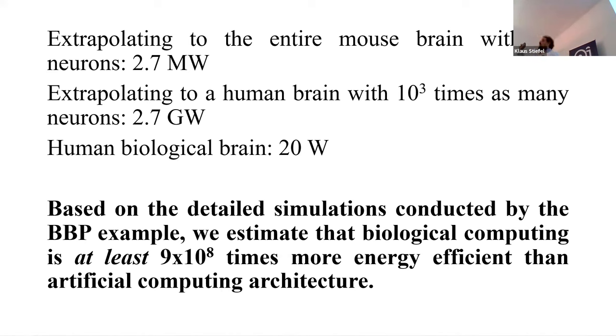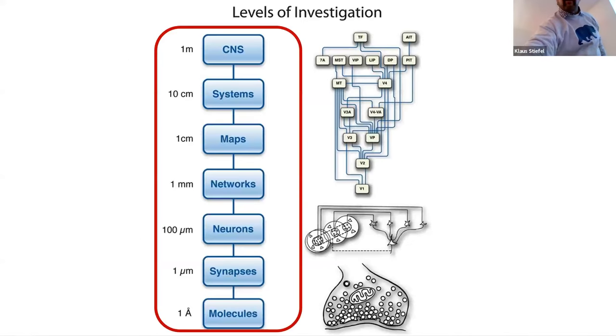And then a conventional computing architecture. So in order to simulate all of these computations, which are actually going on in the human brain, with current, you know, silicon, you know, chip, semiconductor, conventional, I mean, computing architecture, we are, you know, an incredibly large amount less efficient.